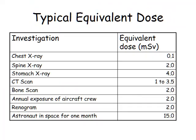Typical equivalent doses: a chest x-ray gives 0.1 millisieverts, a stomach x-ray gives a much higher dose. If you're in space for a month you receive about 15 millisieverts. If you fly in a plane you're exposed to more cosmic rays, giving a higher equivalent dose through your job — similar to a spine x-ray.